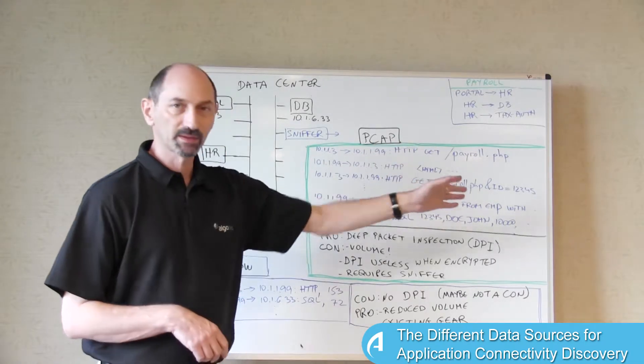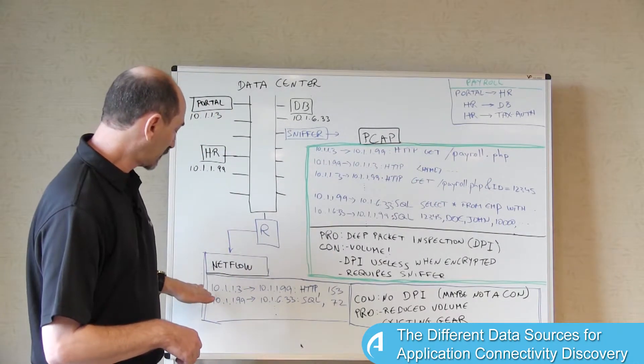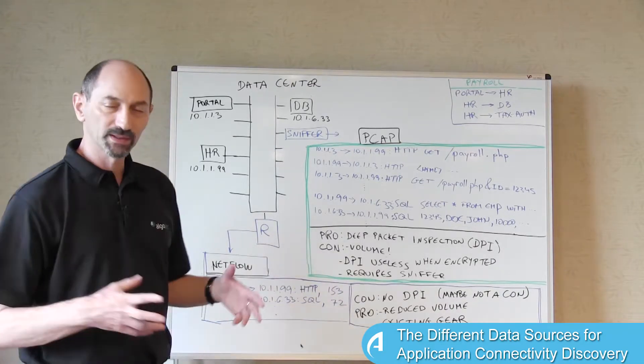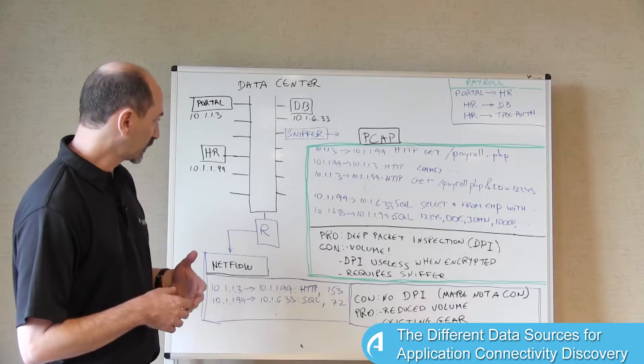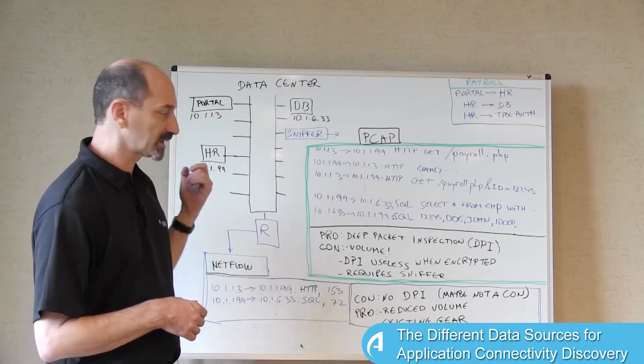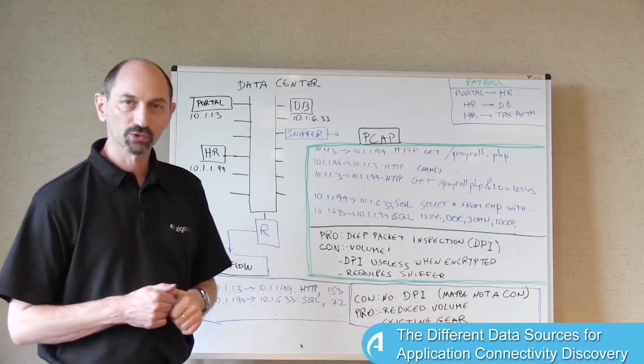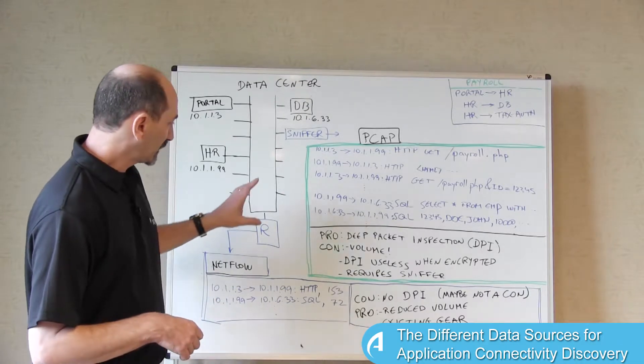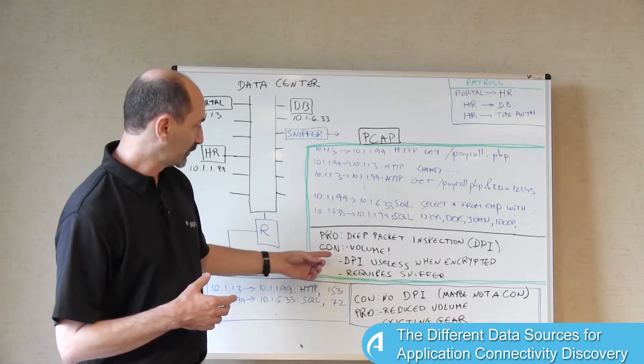NetFlow is a much more condensed data source. It aggregates many packets into one record, and it doesn't include all the payloads. It just includes the meta information, so it's much shorter. Using NetFlow reduces the problem of volume.